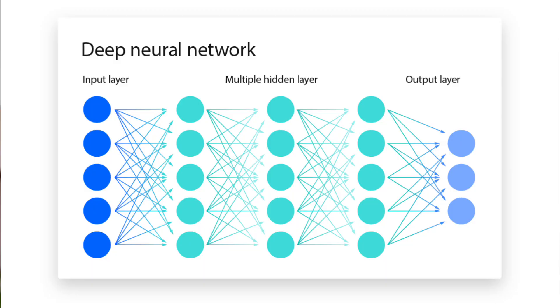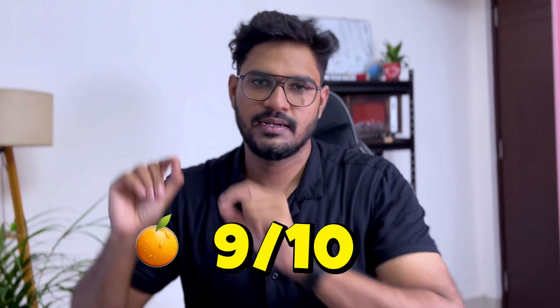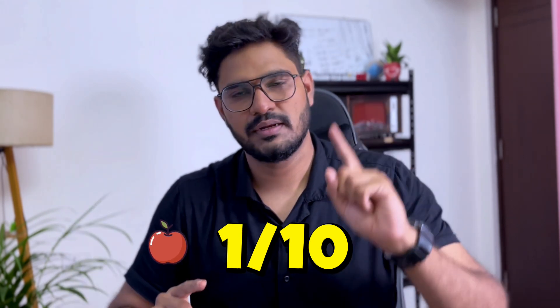Now let's understand how to use neural networks. We use three layers: input layer, hidden layer, and output layer. For the input layer, you give features like shape and weight a numerical rating — for example, 9 out of 10 for orange-like traits, 1 for apple-like. You compute an average value, that becomes the product output. Math concepts like statistics, probability, linear algebra, and calculus are used here, but you don't need to understand them deeply.